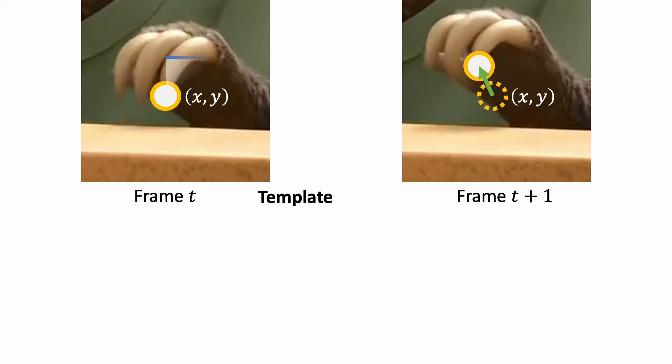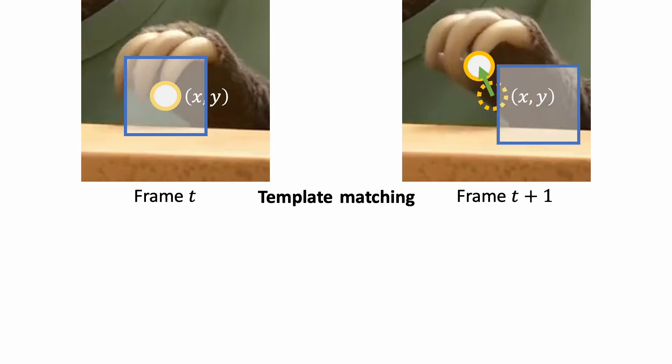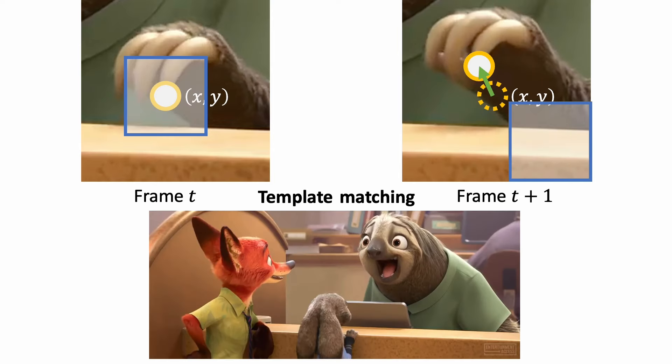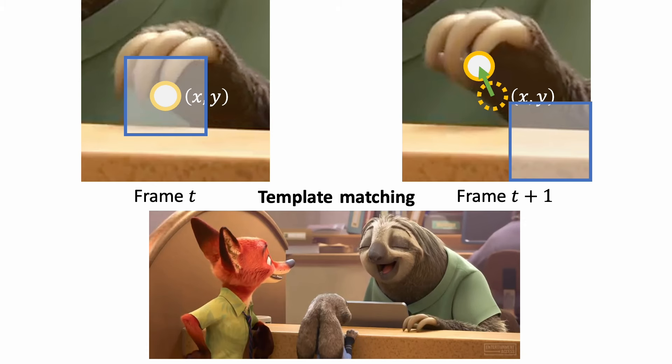We can use a local patch centered around our keyframe as template and find the corresponding patch in the next frame by trying out all possible motions. But this is just too slow. Let's see what we can do.